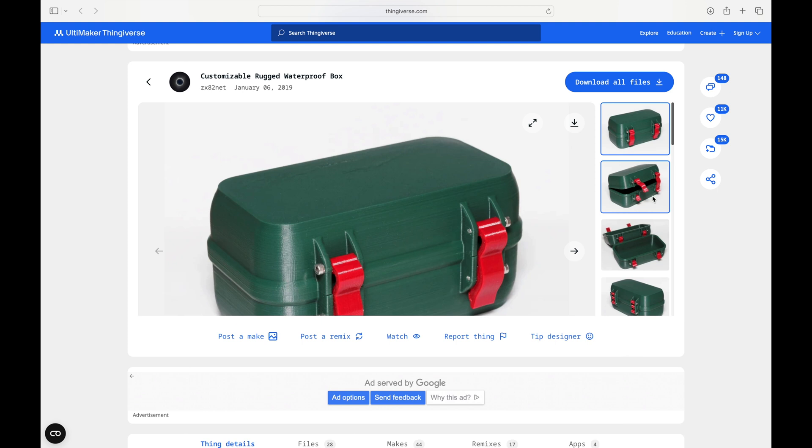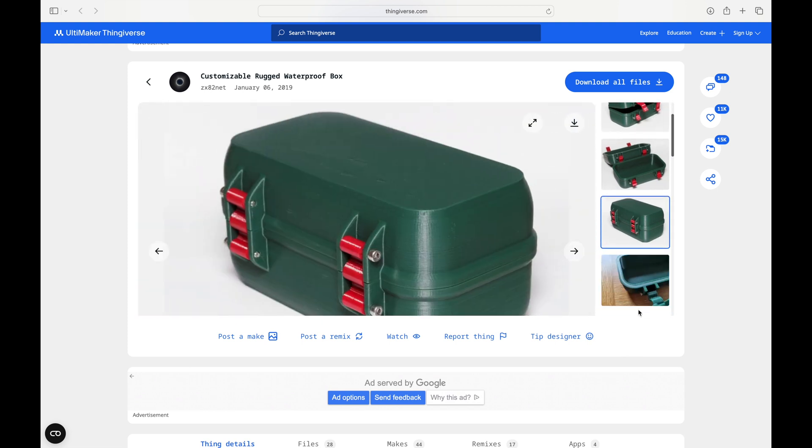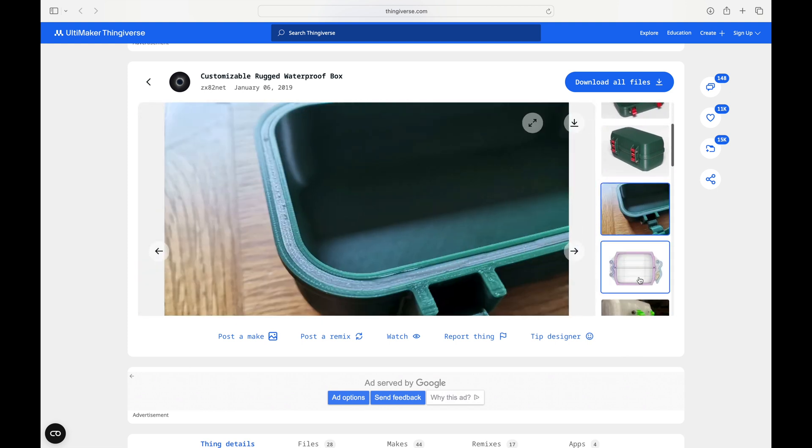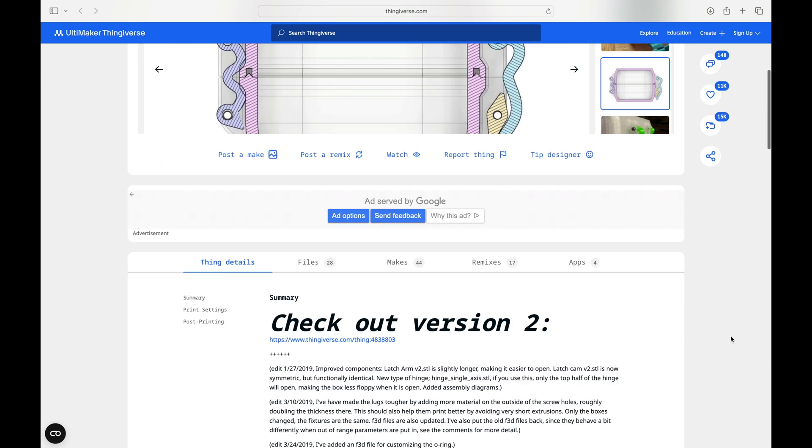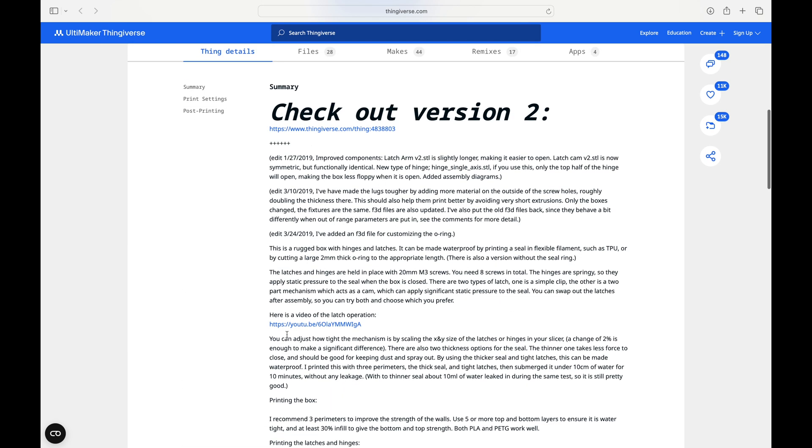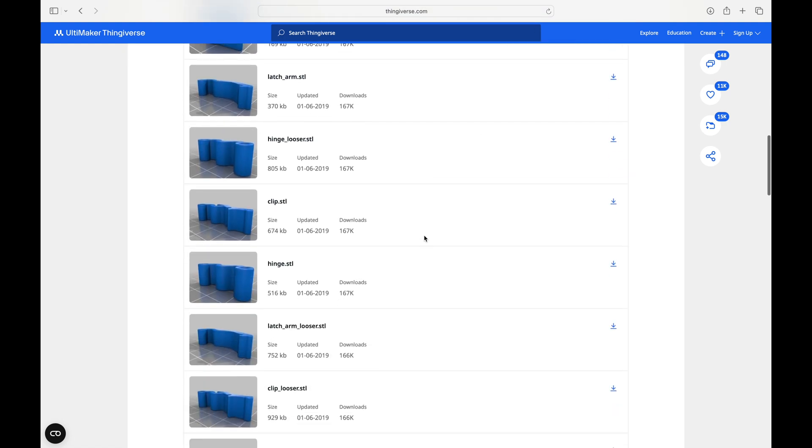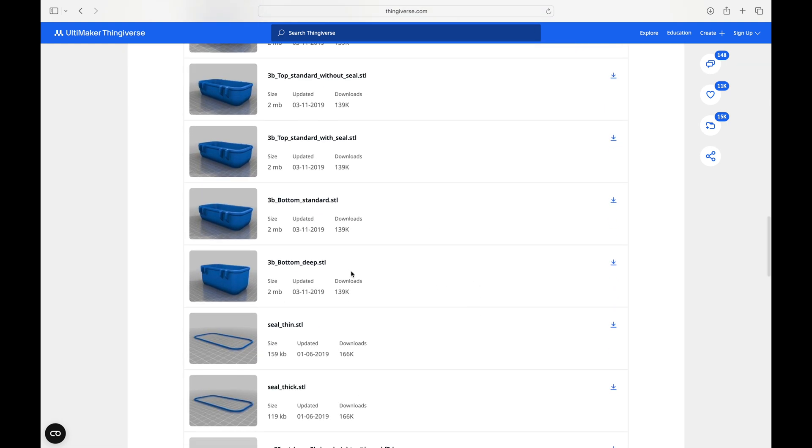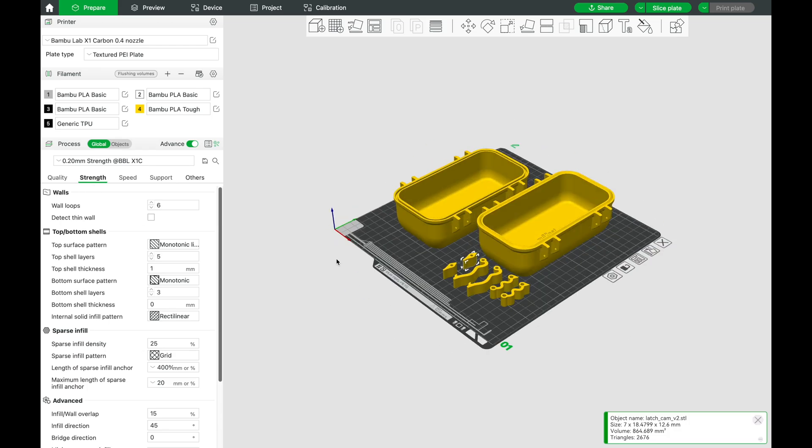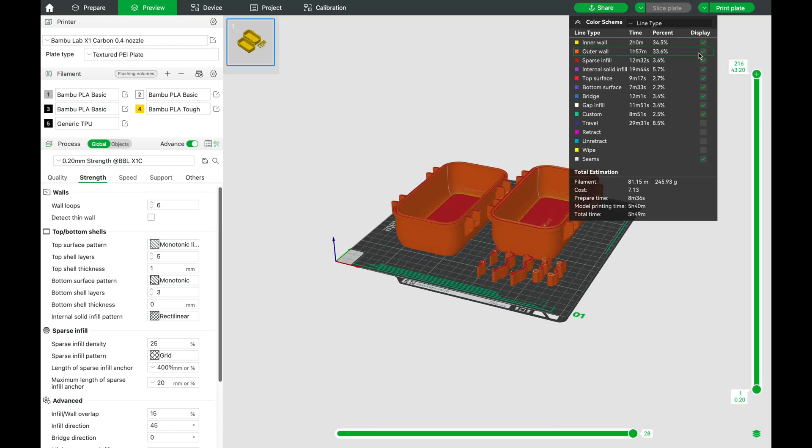This next case we found over on Thingiverse, designed by ZX82NET, not only has an articulating latch design, but it also has an articulating hinge design as well. We chose version one for our testing, but there are multiple versions of this box, including various hinge and latch designs, as well as Fusion 360 files. We had no issues importing the files, and everything fit nicely on one plate.